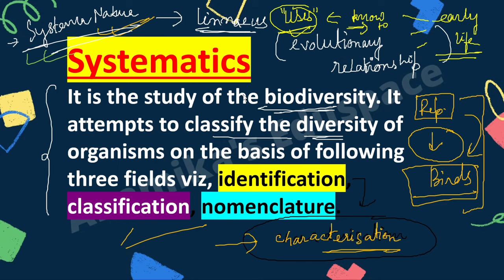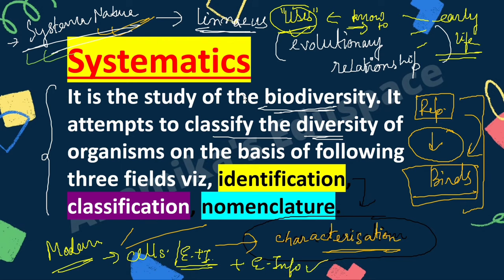In modern taxonomy, we consider the cell structure, external and internal structure, developmental process, and ecological information of the organism — where it lives, what it eats, where it resides. But in the earliest classification, only the uses of various organisms were known.